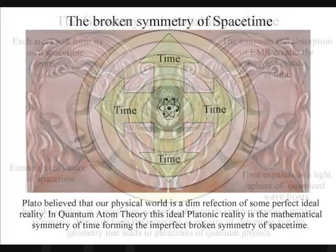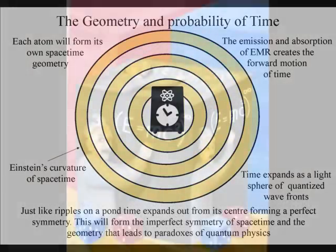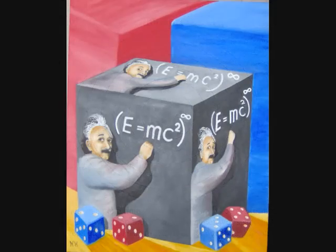In quantum atom theory, time has geometry and asymmetry that can explain the probability and non-locality of quantum physics.